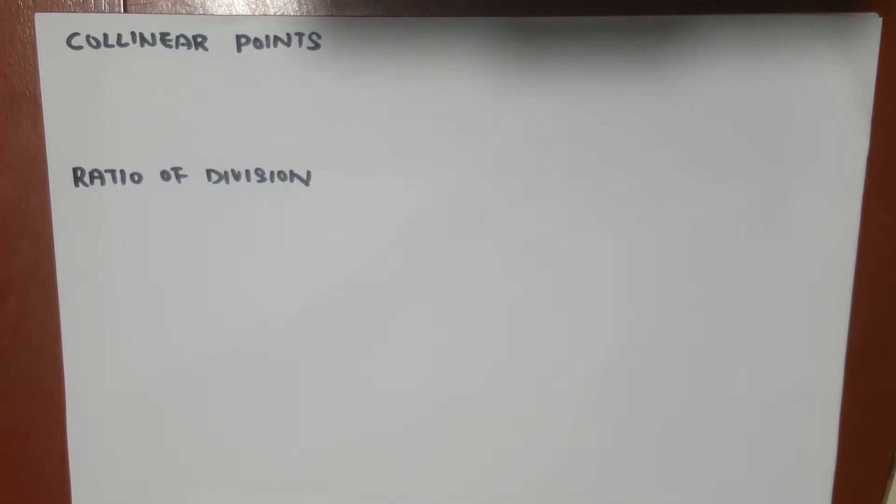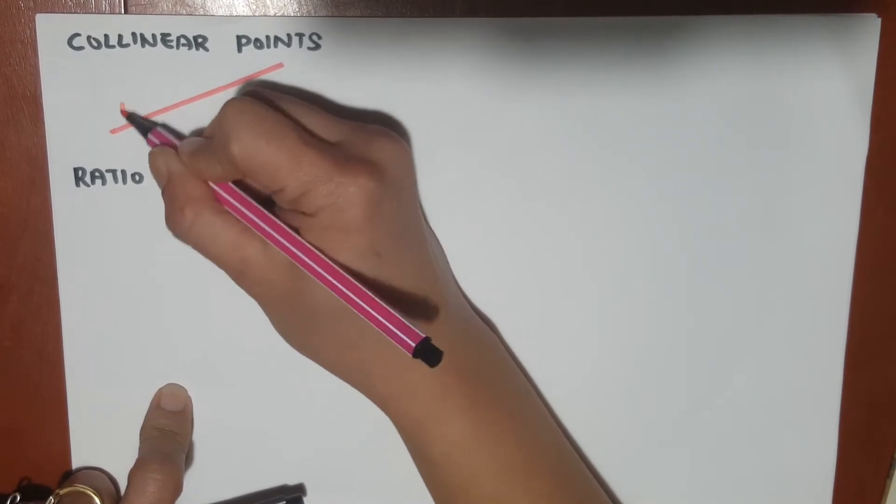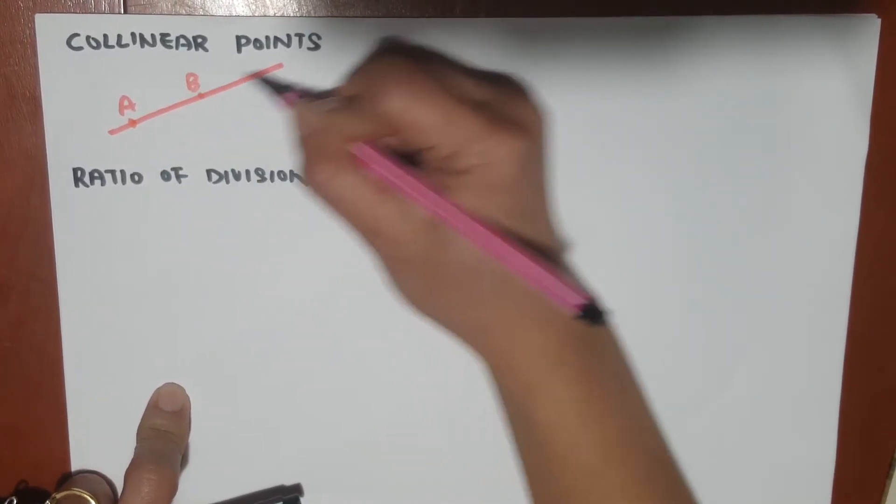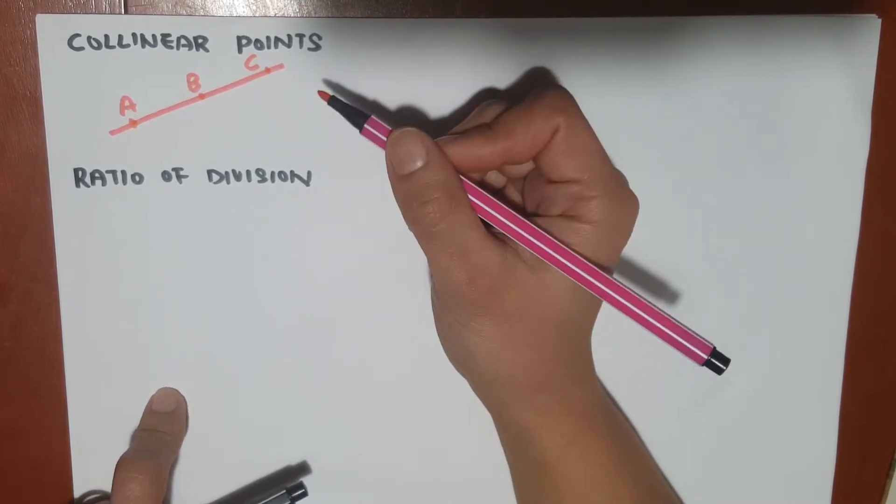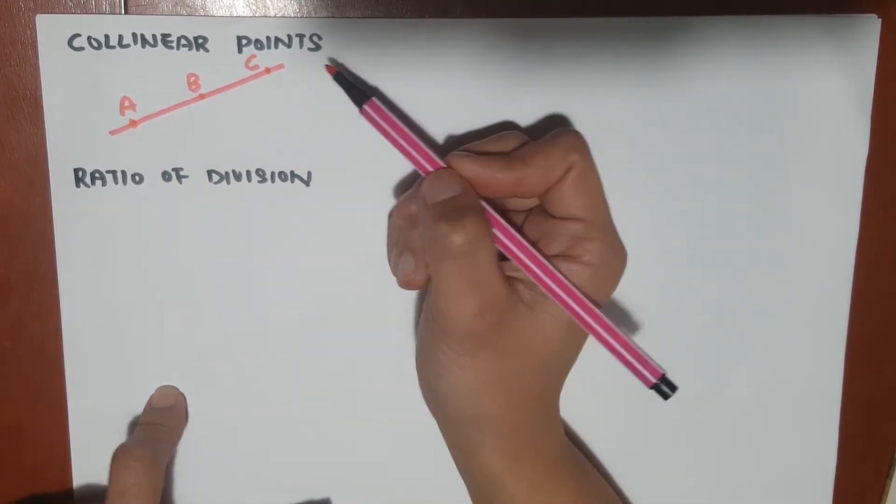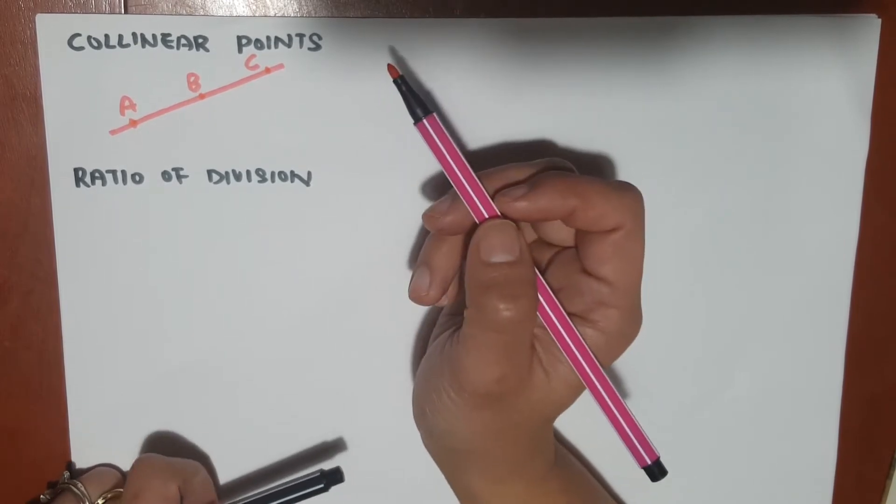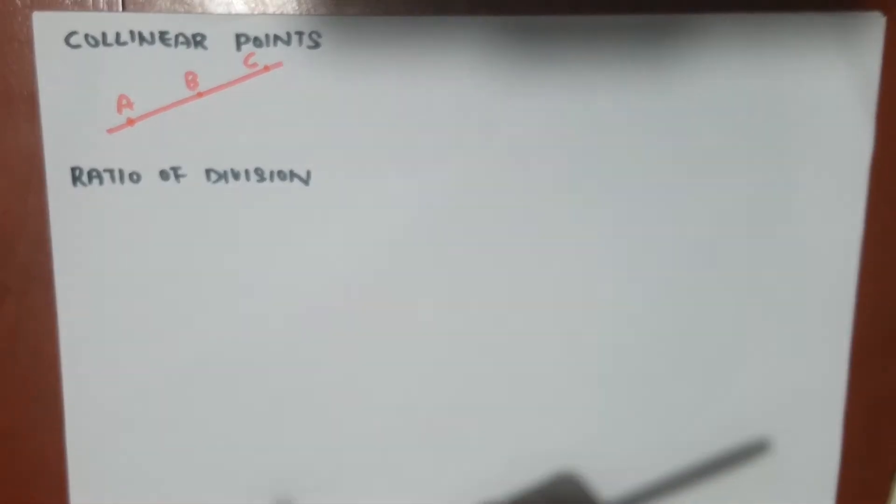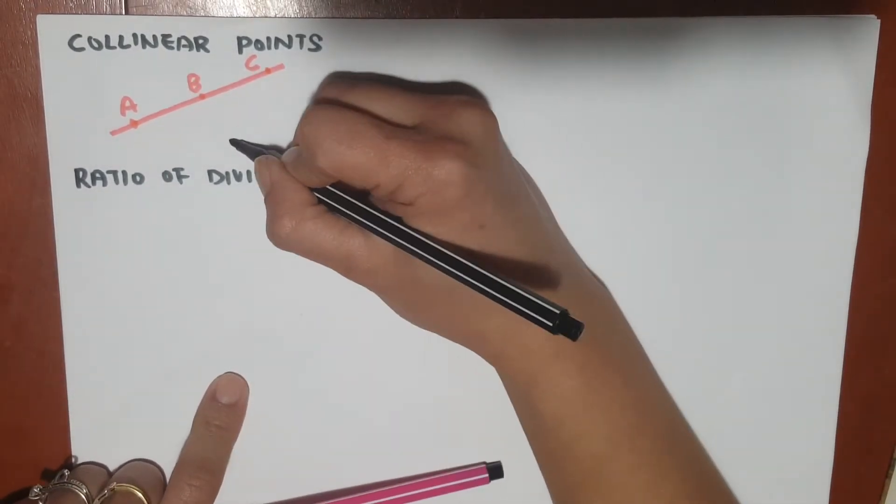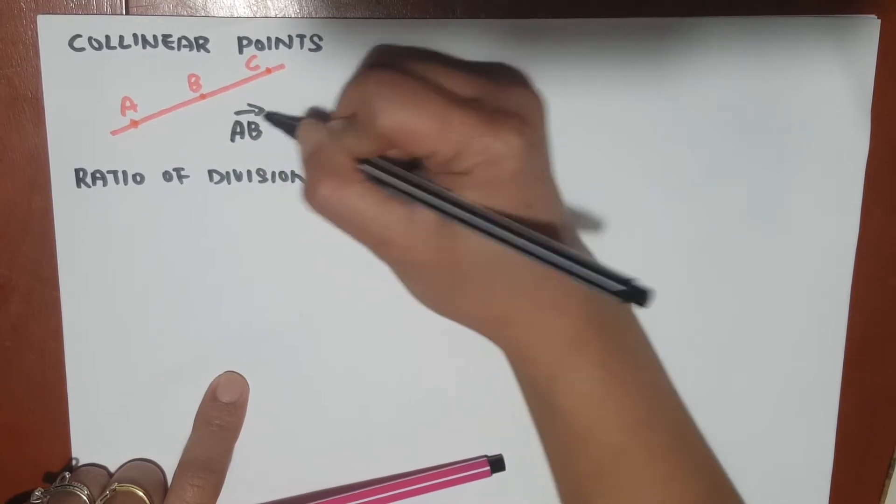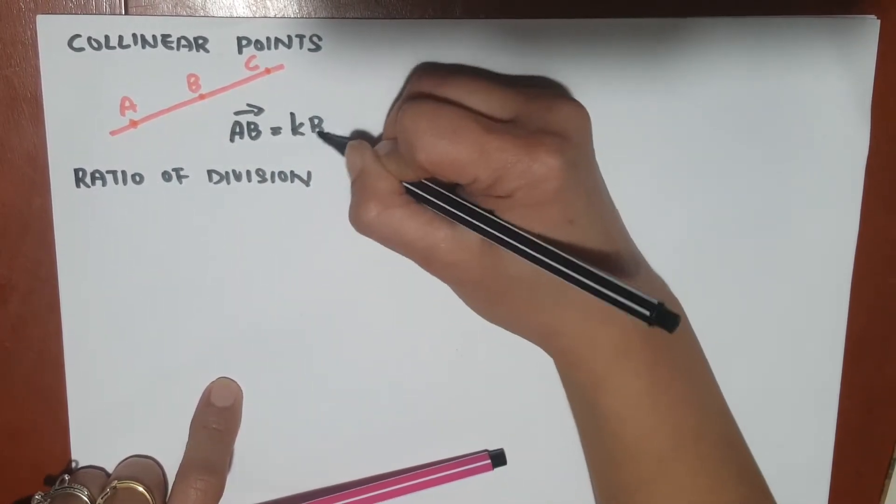So for example, if I have a line and I have the points A, B, and C all sitting on the line, I can say that these three points are collinear, meaning they lie on the same straight line. Collinear points have the equation in the form of vector AB equals K times BC.